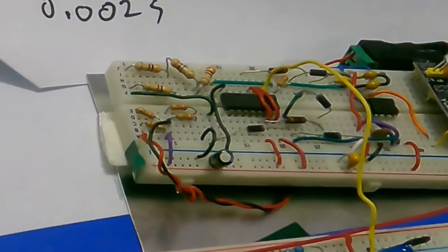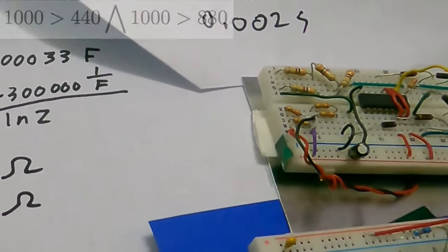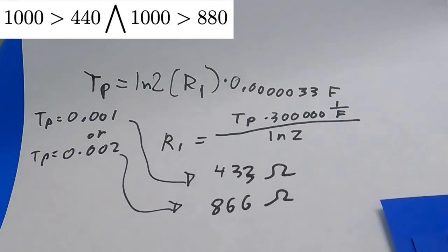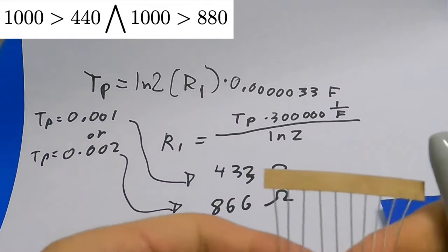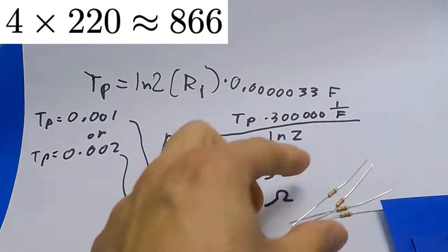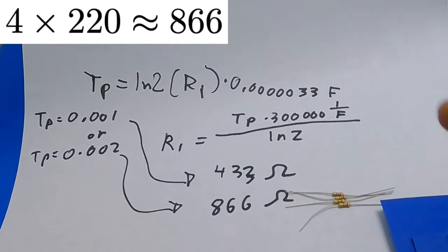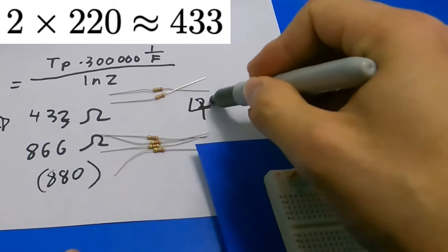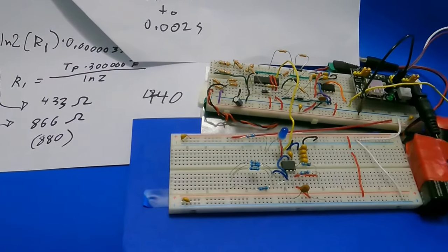And these resistors, as I've measured, are a little bit too much. They are each 1000 ohms. Okay, I'm going to get as close as I can. With four 220 ohm resistors, giving me 880. And two 220 ohm resistors, giving me 440. Alright, time to plug everything in and see.